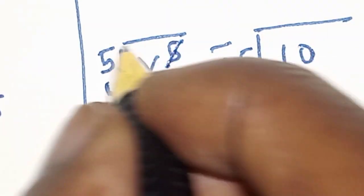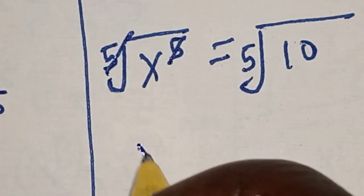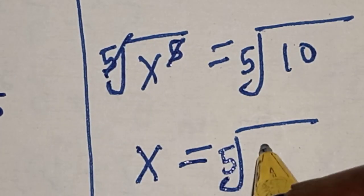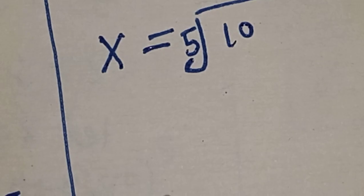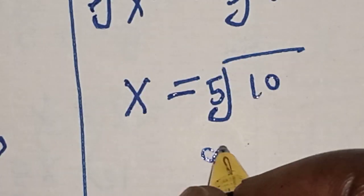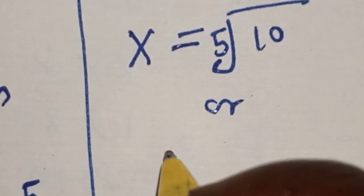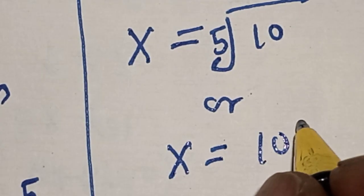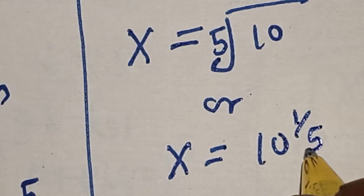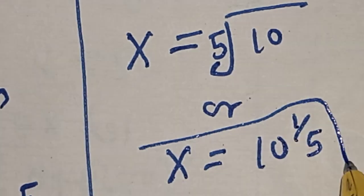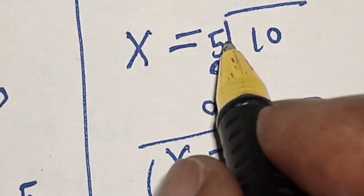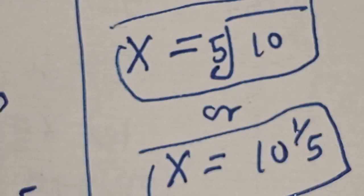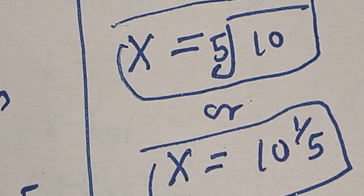The fifth root and the power of 5 cancel, giving us s is equal to the fifth root of 10, or equivalently s is equal to 10 raised to power 1 over 5. That is our final answer. If you love the class, like, share, comment, and subscribe. Thank you, bye bye.